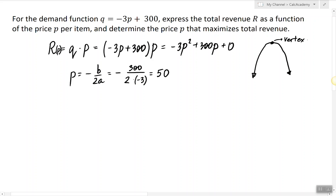Now how do we interpret that? We interpret p as the input at which the function obtains its maximum value or its maximum output, and in this case, since the function is revenue, it's going to be the maximum revenue.